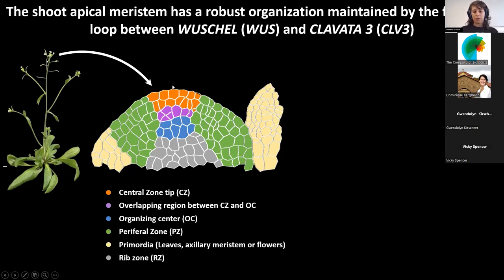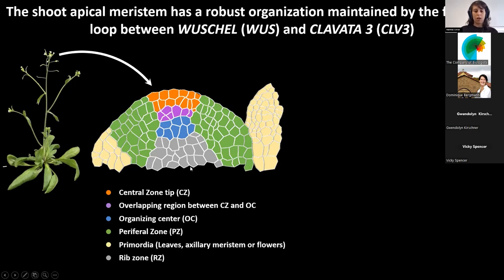The stem cells divide slowly and can feed into the lateral part of the tissue, here represented in green and called the peripheral zone. When cells from the central zone move into the peripheral zone, they start to actively divide and move from the tip toward the lateral part, until they are recruited into this yellowish region where primordia start to differentiate and acquire identity. Primordia can be different — from leaves to flowers to auxiliary meristems. Another important region is the rib zone, located below the organizing center, which becomes important when the plant has to produce the stem.